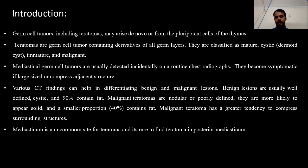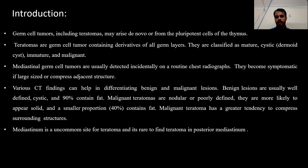The CT findings differ between benign and malignant lesions. Benign lesions are usually well-defined, they are cystic, and the majority of lesions contain fat. Malignant lesions are nodular, poorly defined, ill-defined. They are more likely to have a solid enhancing mass within the teratoma, along with only a small portion of the tumor containing fat. Mediastinal teratomas have a tendency to compress adjacent structures. It is an uncommon site, and it is rare to find teratoma in the posterior mediastinum.